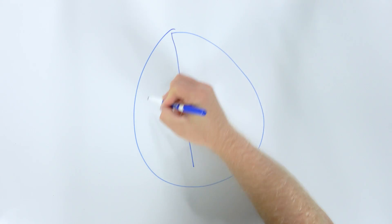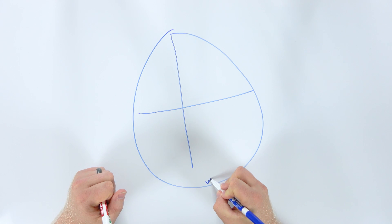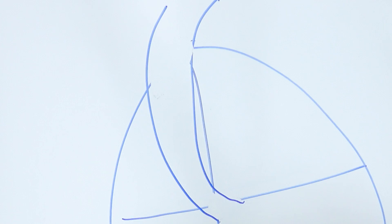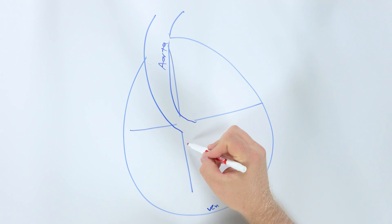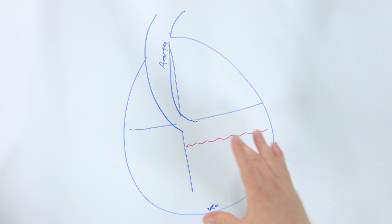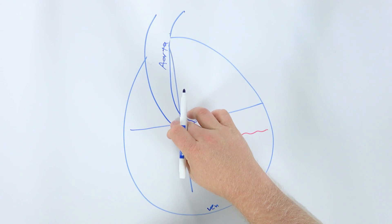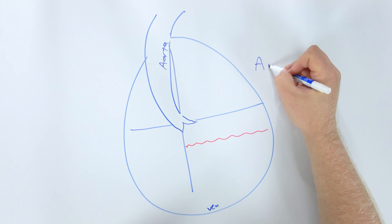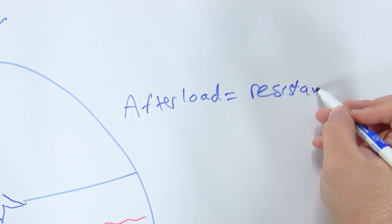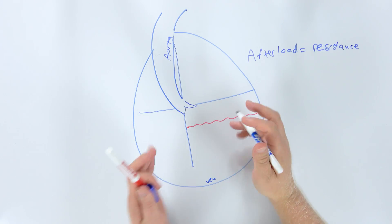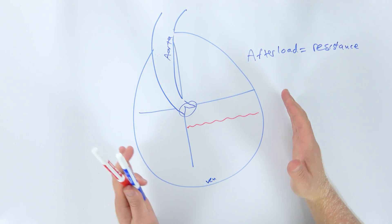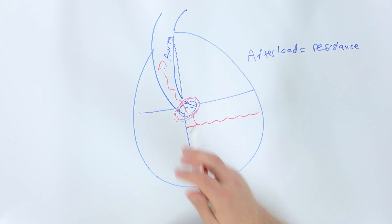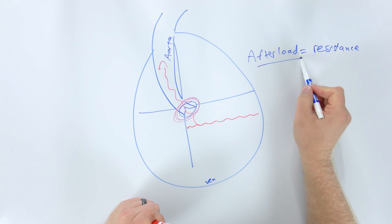Let's draw our heart one more time and talk about afterload. Here's our heart again, here's our ventricles, and coming out of our left ventricle is our aorta. Inside here, at the end of diastole, we have all this nice fresh blood. In order for this blood to get out of the ventricles and into the aorta and out to the body, we've got to squeeze it into the aorta. Afterload is the resistance that this ventricle has to overcome in order to open that aortic valve. Think of afterload as a resistance.